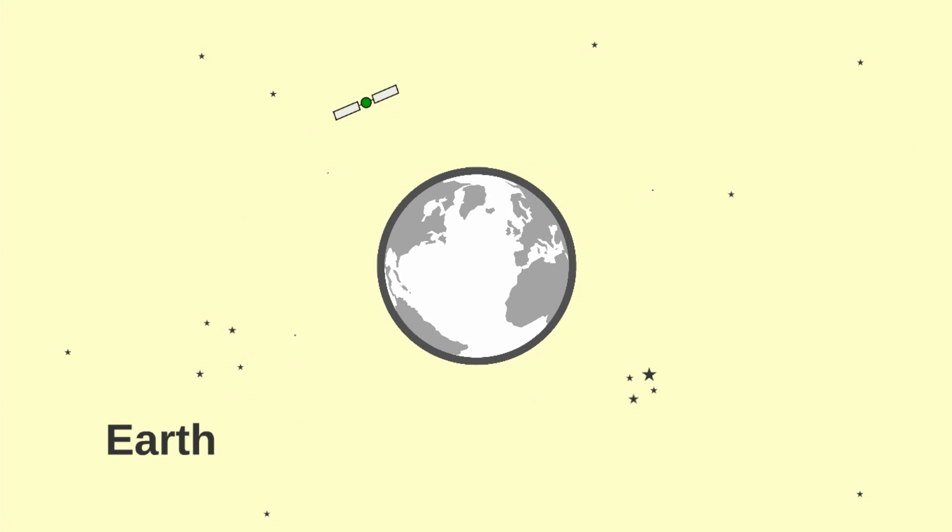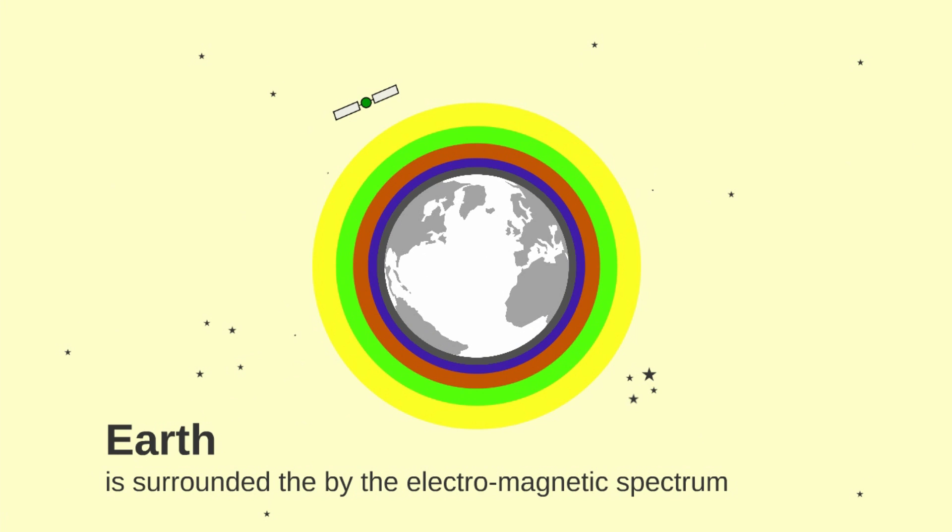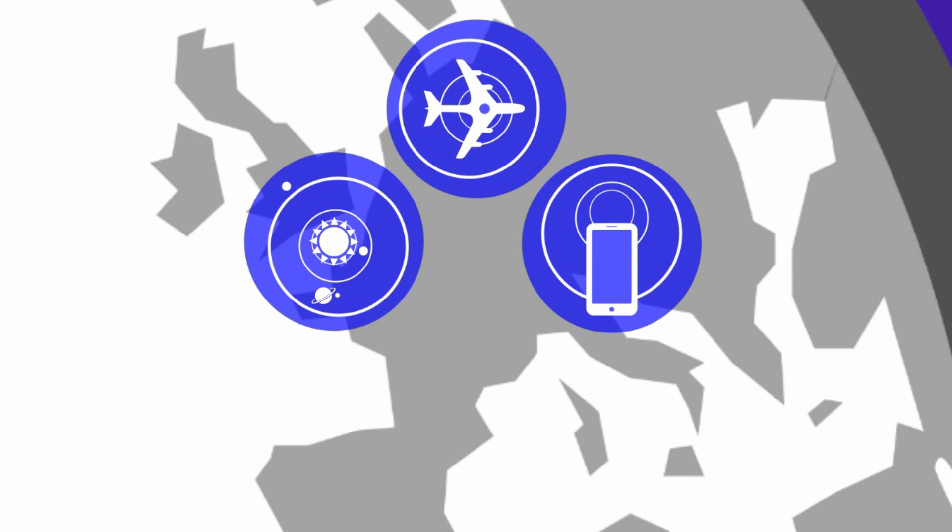Here's our Earth. Earth is surrounded by the electromagnetic spectrum. The spectrum contains a range of different frequencies of electromagnetic radiation. The spectrum extends from frequencies caused by natural phenomena everywhere in space to frequencies used by modern radio communication.